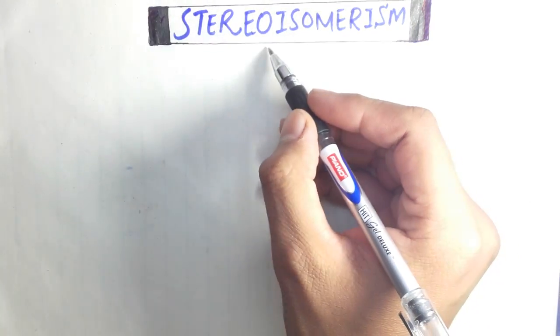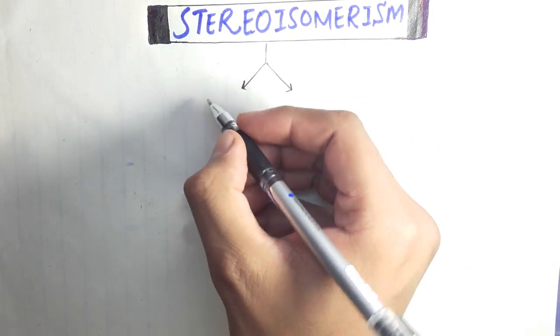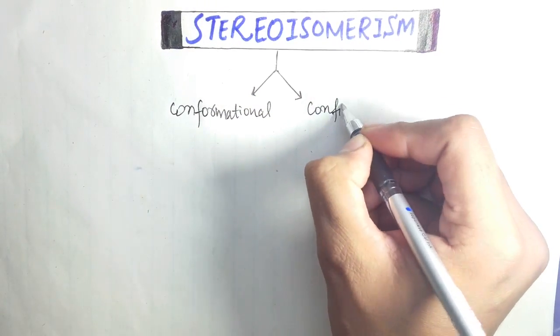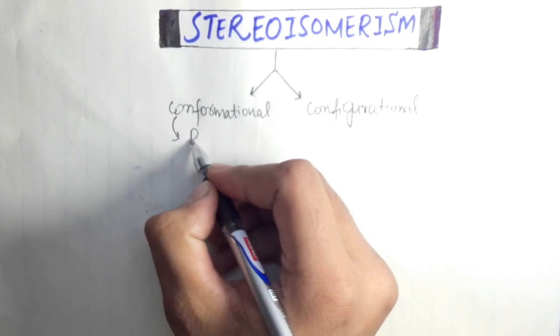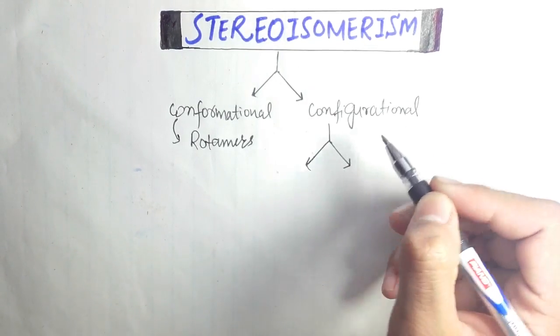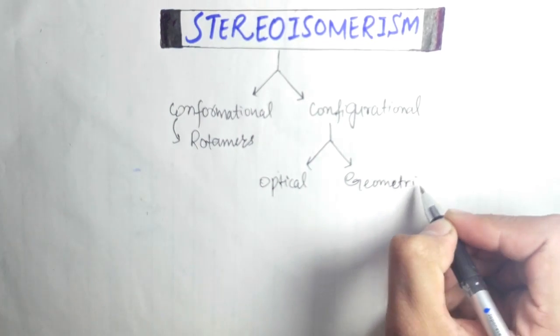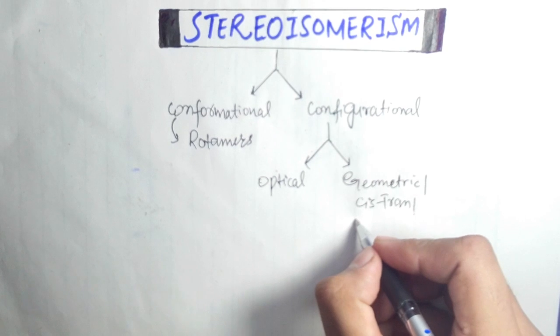I am Ghazanfar and today I will discuss stereoisomerism and its types. Stereoisomerism is divided into two major types: conformational isomerism and configurational isomerism. Conformational isomerism is also known as rotomers. Configurational isomerism is further divided into two main types: optical isomerism and geometric isomerism. Geometric isomerism is also known as cis-trans isomerism or E-Z isomerism.